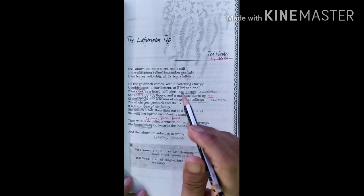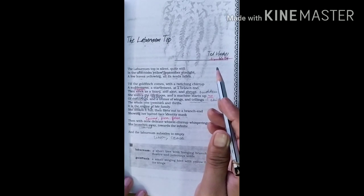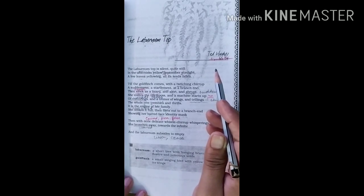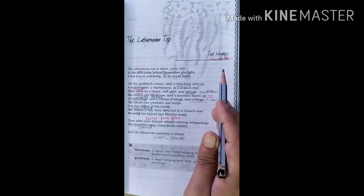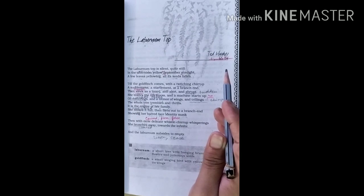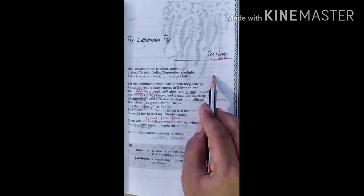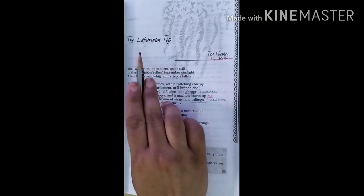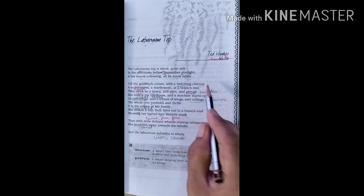The poem begins with the description of the Laburnum top. On a September afternoon, the top of the tree stands silent and still. The leaves of the tree have started yellow and the seeds have already fallen. The scene depicts the season of autumn. And how we can know? Because the seeds of the Laburnum tree have already fallen.